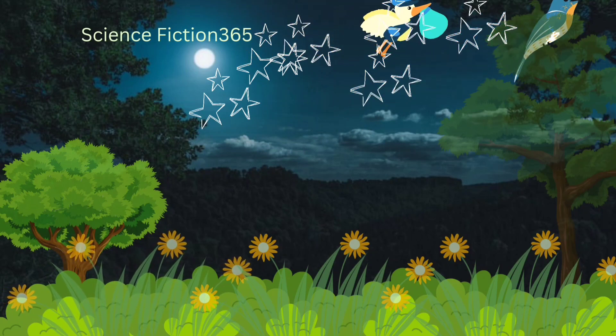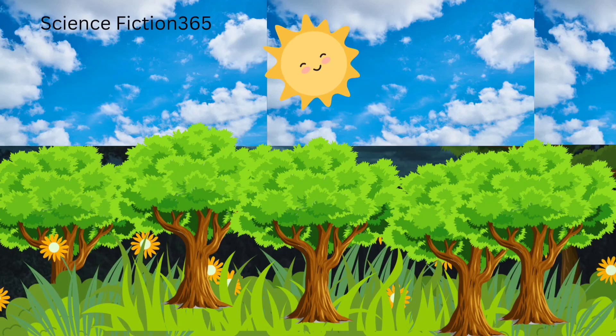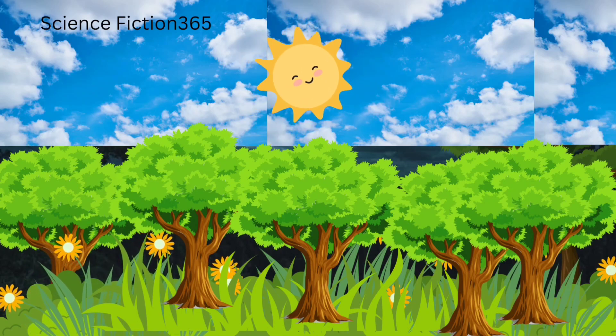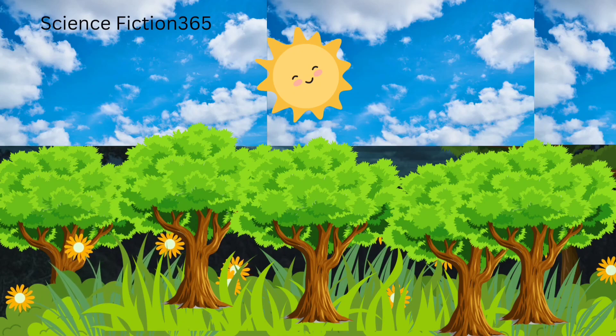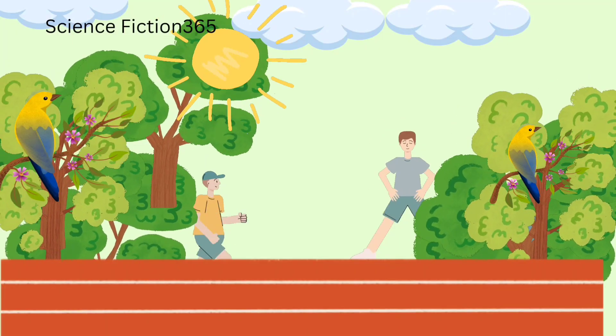Without sun there will be no light and no life on Earth. The sun is a huge star present at the center of the solar system. The sun gives us heat, light for the environment, and for the growth of different living organisms.